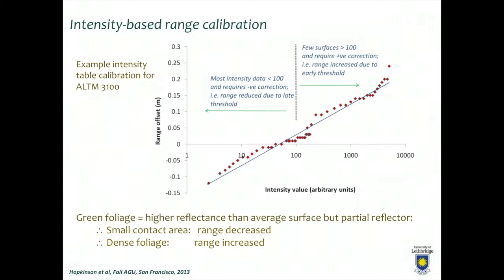All of the returns in a discrete system are calibrated against signal strength — the intensity. Here we have a calibration table: an index of intensity with arbitrary units. Low intensity values are dark signal responses; high intensity values are bright. There is a range offset associated with those signal intensities — negative offsets for low intensities and positive offsets for high intensities, ranging on the order of 15 cm up to about 20 cm. If you don't have this intensity calibration accurately defined, you can introduce decimeters of systematic error just from the signal intensity response and internal calibration.